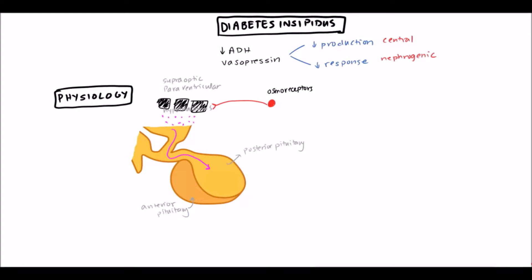The posterior pituitary is not producing any ADH whatsoever — this goes through a specialized portal vessel system. When ADH is secreted from the posterior pituitary, it acts in two primary places. The first is the V1 receptor, which is located on blood vessels and causes vasoconstriction.